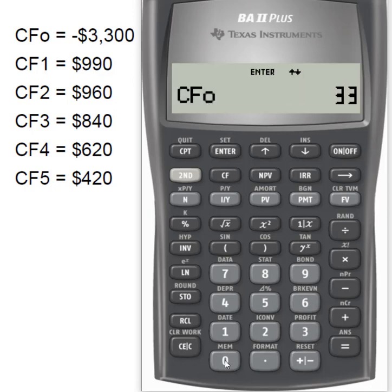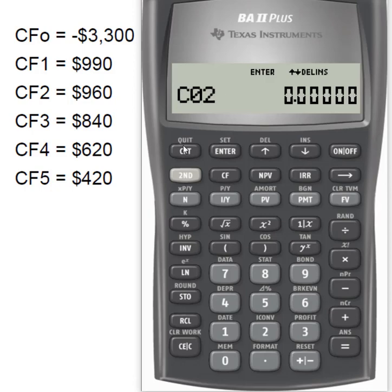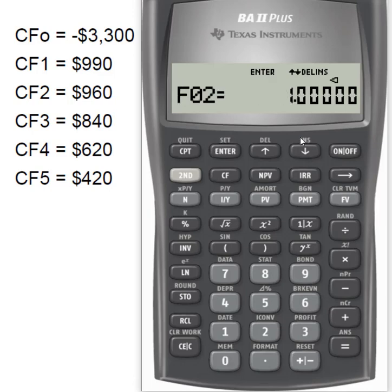Cash flow zero: 3300, negative, enter, then down arrow. Cash flow one is 990, enter, down. The F01 prompt is simply asking what is the frequency of cash flow one — we only get one of those, so we hit the down key. Cash flow two is 960, enter, down. Again, just one, so down.